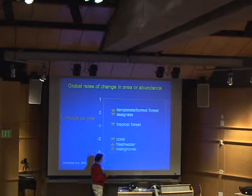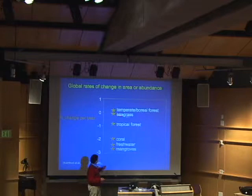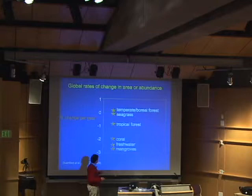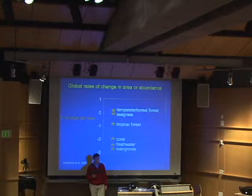How does this manifest itself in terms of how habitats are affected? Here is an attempt to compile a couple of studies that have tried to look at global rates of change of major habitats. It's surprisingly difficult to get this information — remote sensing is making it easier, but it's still very difficult. We're losing seagrass in many parts of the world, tropical forests. But look at how badly coral reefs, freshwater habitats, and mangroves are doing. Some of these major aquatic habitats are in as much or probably even more trouble than the terrestrial habitats one usually hears about in the press.